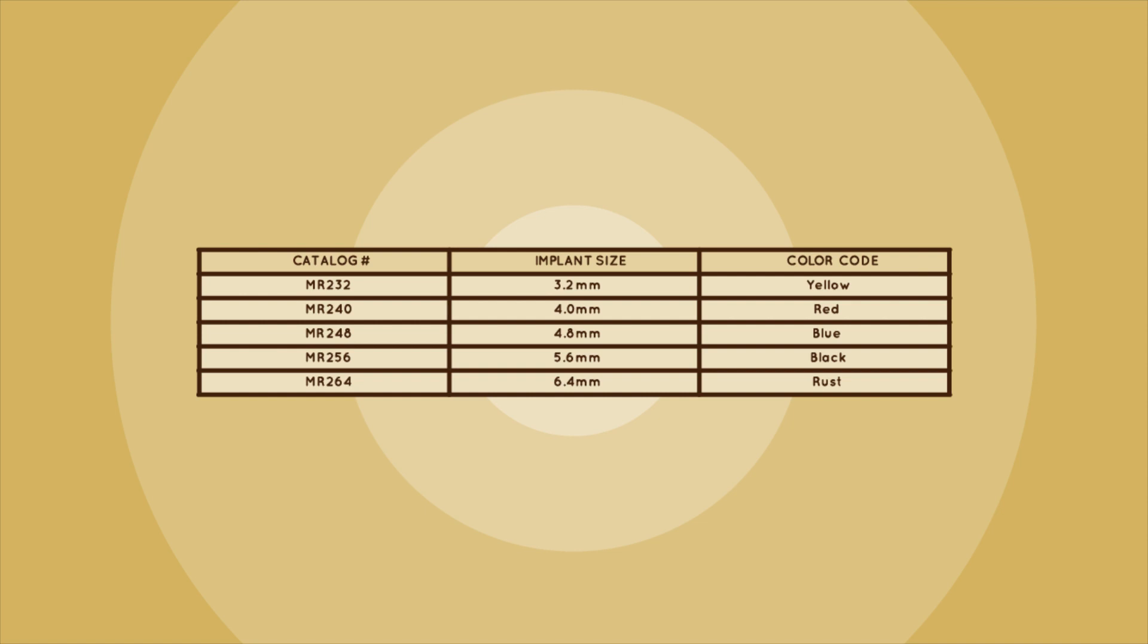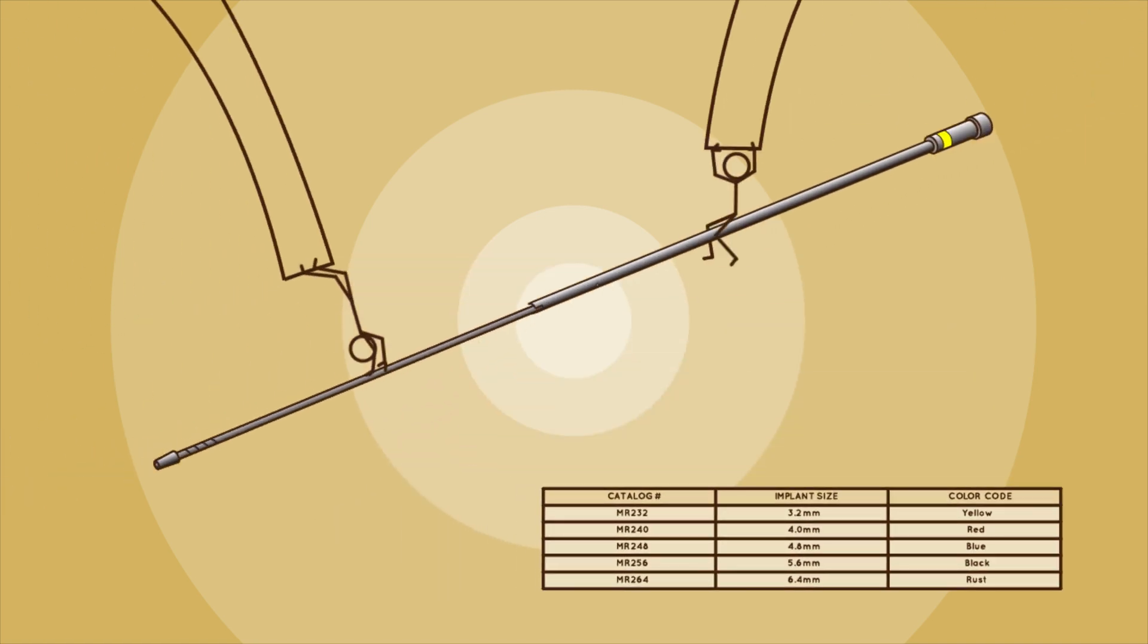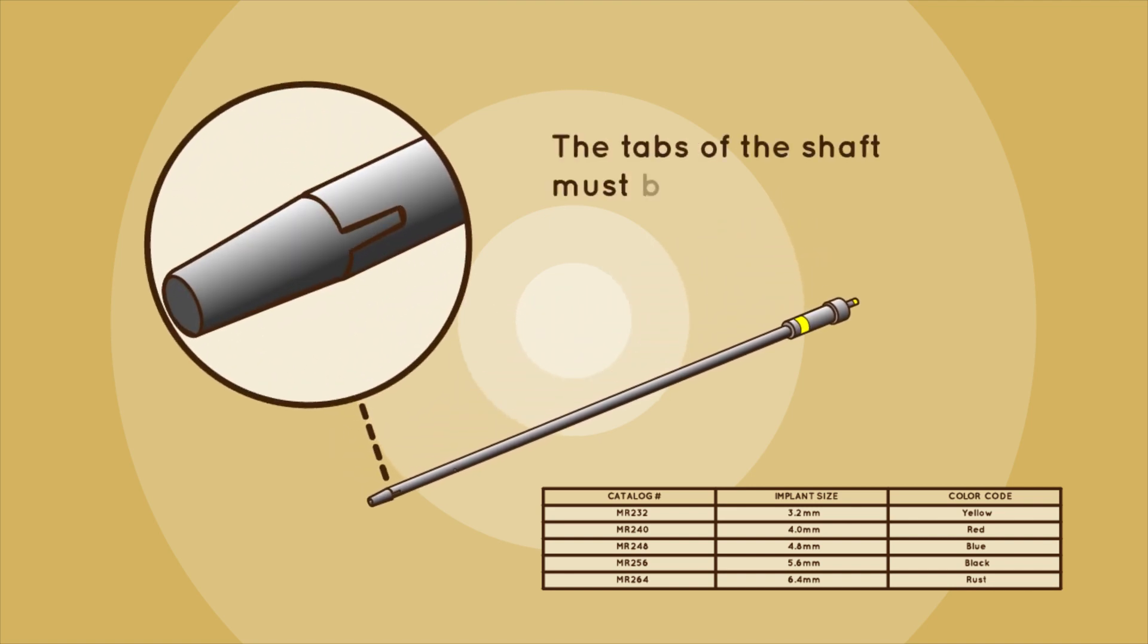Select the required size for use before starting the assembly process. Once the required size of shaft and tube is selected, insert the shaft into the tube as shown. The tabs of the shaft must be fully engaged inside the notches of the tube.